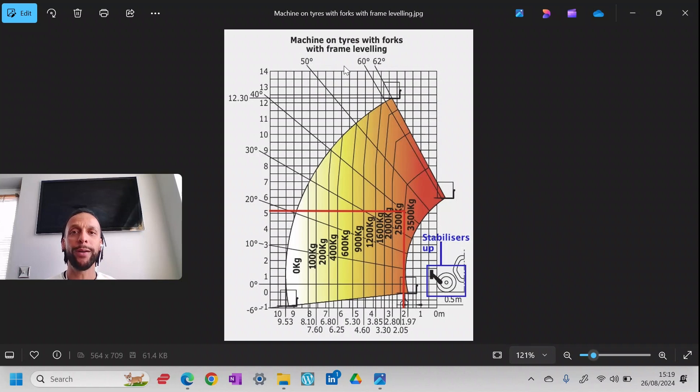This one is on tires with frame leveling. So on tires meaning it's not using the stabilizers. The stabilizers lift the tires off the ground to stabilize the telehandler, but this one is just lifting with tires. The frame leveling is because it hasn't got the legs down, and also because ground isn't always level. If you're slightly tilted, the telehandler will try to level it up for you so that you're not lifting on the tilt. The chart reads exactly the same as the last one, except that it'll lift slightly less now because it hasn't got the legs to stabilize the telehandler.